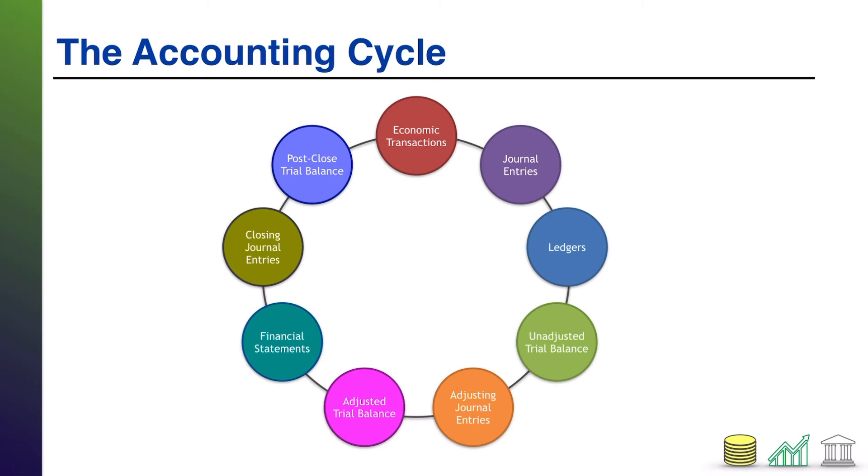Now, here's an illustration of what the accounting cycle looks like. It moves clockwise around this circle, and it starts at the top with economic transactions. Companies engage in economic transactions. Those economic transactions get captured in what's known as the journal entry. This is the input of the transaction into the accounting system. Those journal entries are then parsed out into individual account ledgers, where the activity in each account of the company, say the cash account or the receivables account, is tracked separately.